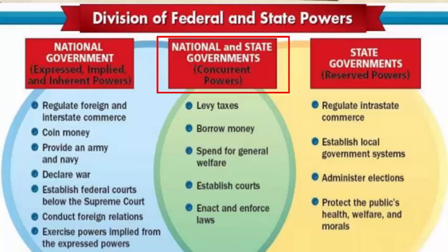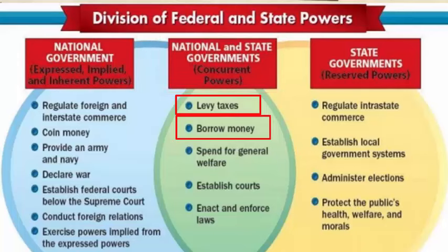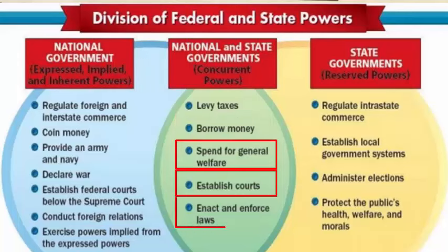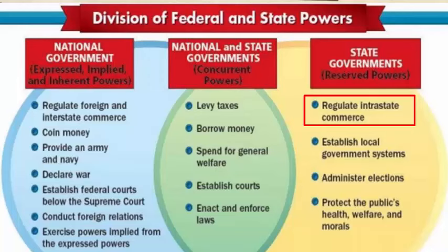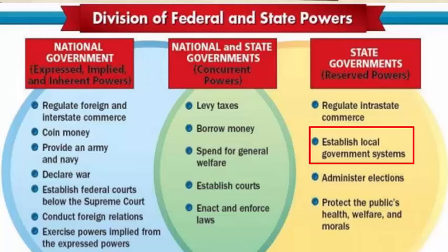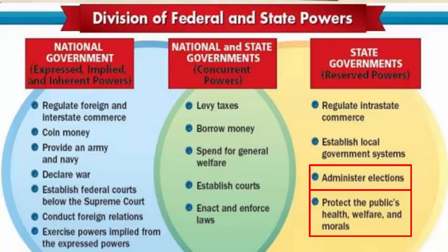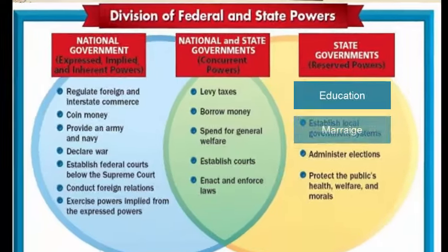Concurrent powers — both the national and state governments can tax, borrow money, provide for the general welfare, establish courts, and pass and enforce laws. Reserved powers are the state powers: regulate intra-state commerce (intra means within, so this is trade within the state border), establish local governments, administer elections, and protect the public's health and welfare. I would also add education and marriage to this list.